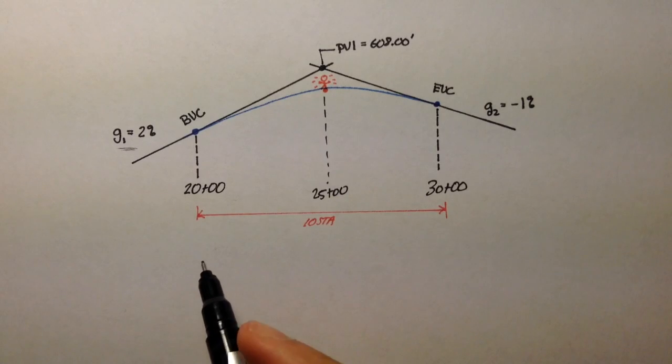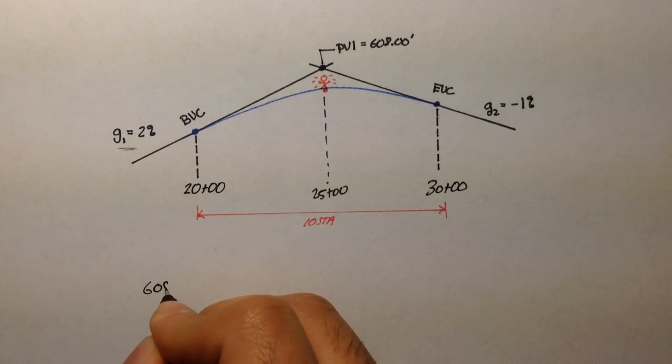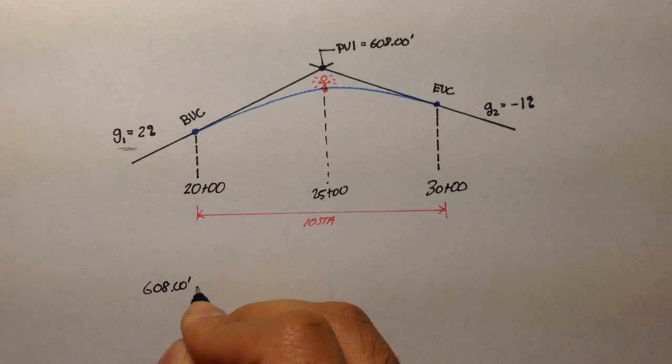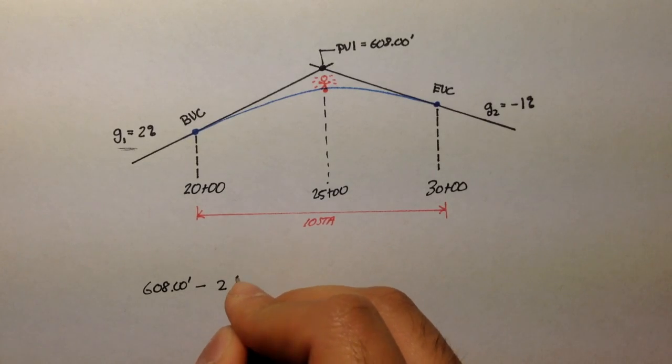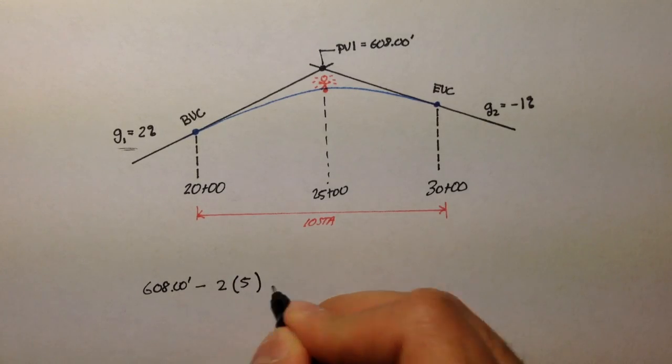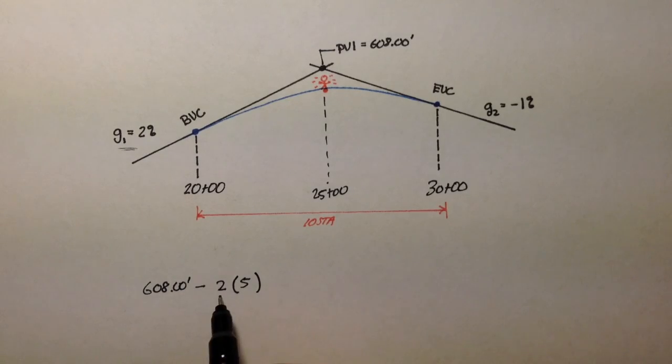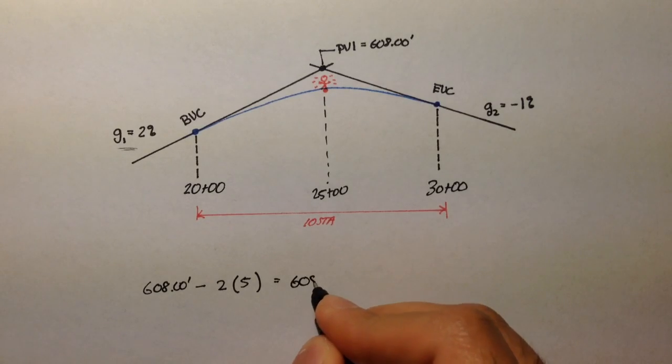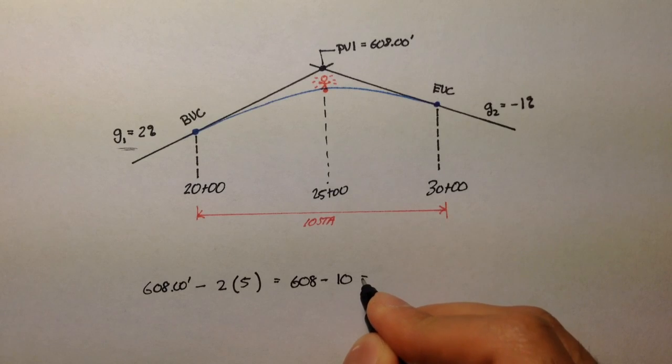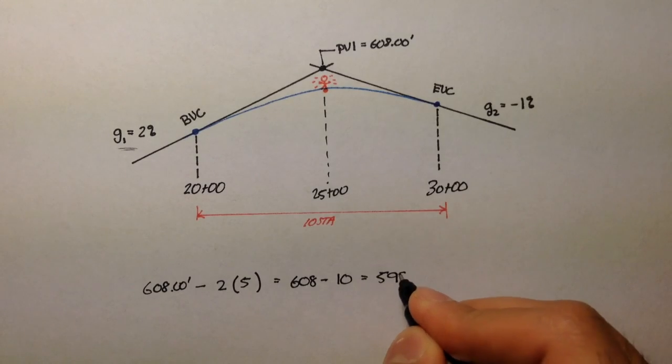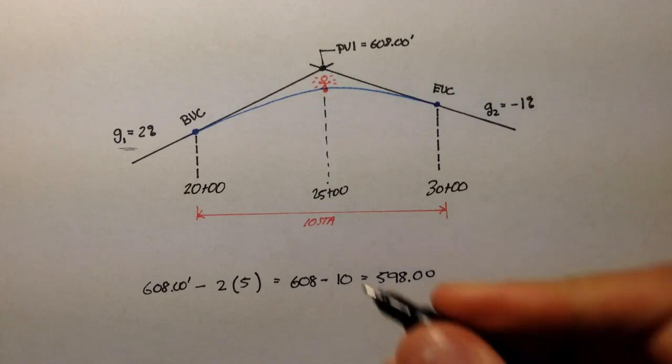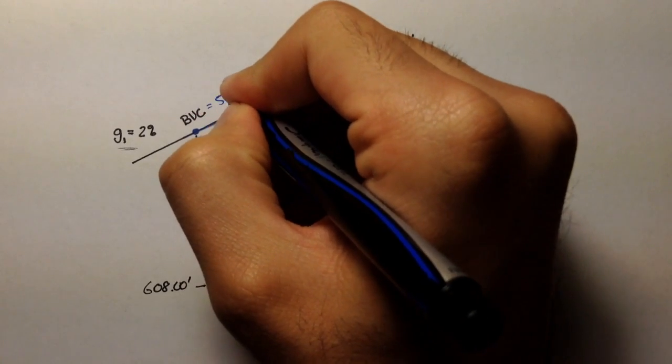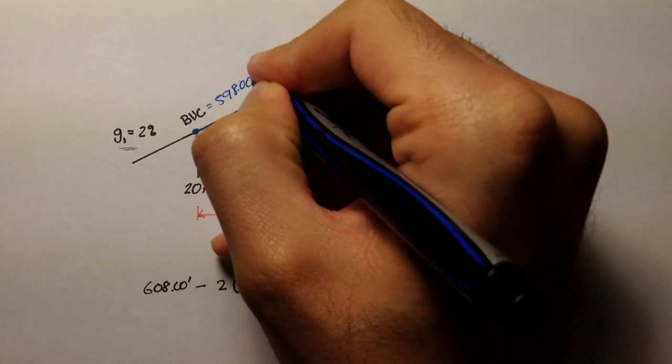We can use the 608 elevation of PVI, the distance of 20 and 25, so that's 5 stations, and we also have the grade. Entering grade is 2%. So, simply 608 minus the grade times the distance in stations. This is in percent, you would keep it as the number in percent times the station. So, it's 608 minus 10, and that gives us an elevation of 598.